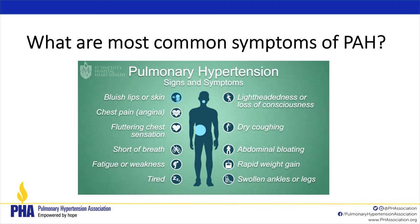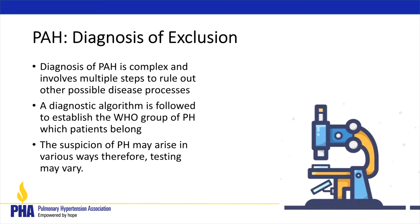Looking at common signs and symptoms, you'll notice they're very vague — dry coughing, bluish lips or skin, chest pain, shortness of breath, fatigue, weakness, lightheadedness, abnormal bloating, rapid weight gain, swollen ankles or legs. These symptoms fit many different diagnoses, which is the problem. That's why we have to do a lot of testing to figure out the cause — it's a diagnosis of exclusion. We do extensive testing to rule out other disease processes and use a diagnostic algorithm to establish your WHO group.